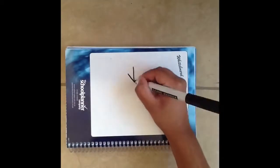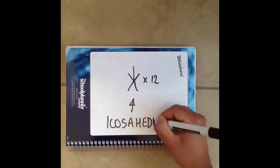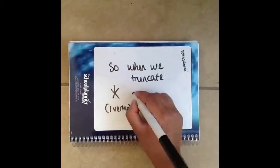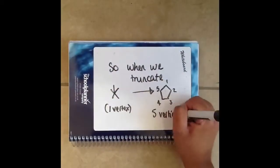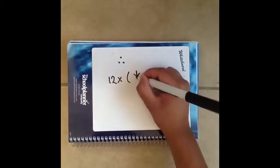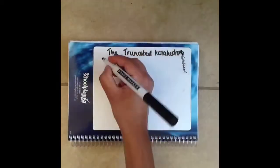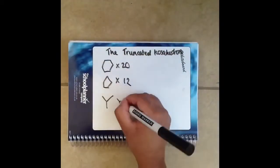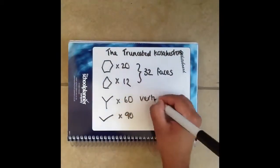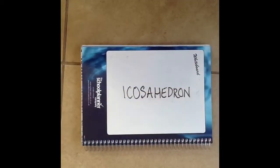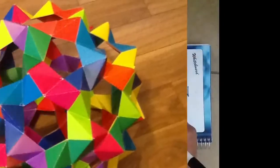And the vertices? Well there are 12 vertices in your icosahedron, so when you truncate it, one vertex gives you 5 vertices, so that gives you 60 vertices. Your solid has 32 faces, 60 vertices and 90 edges. And that is how your truncated icosahedron is derived.